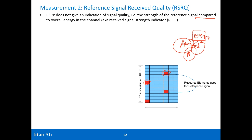The RSRQ value is used to determine whether a handover to another base station should occur — whether the mobile should stop listening to the current base station and start listening to a closer one. RSRQ is therefore an important parameter.